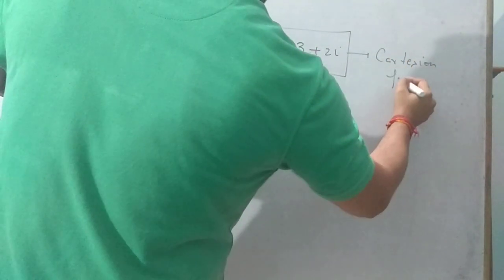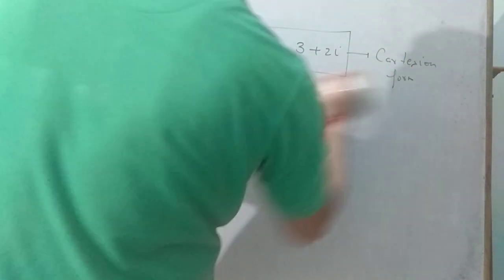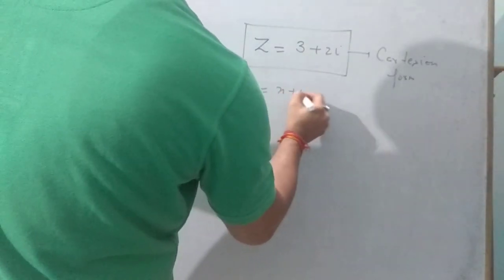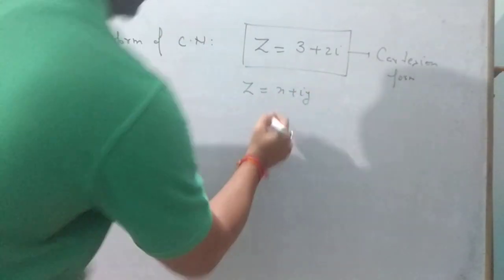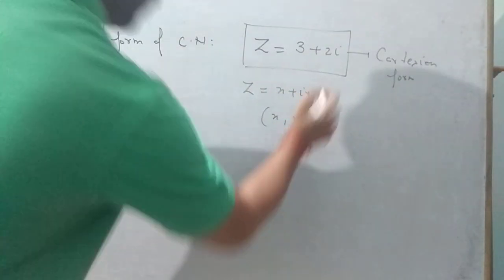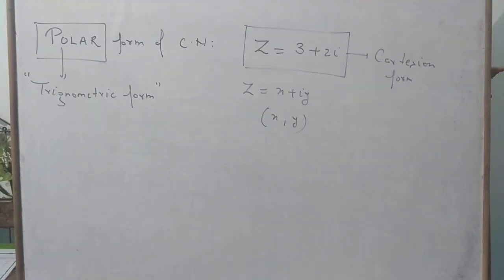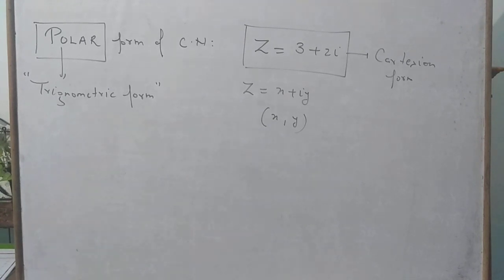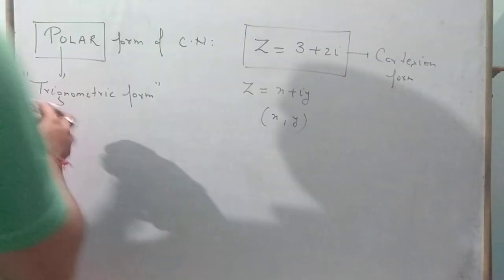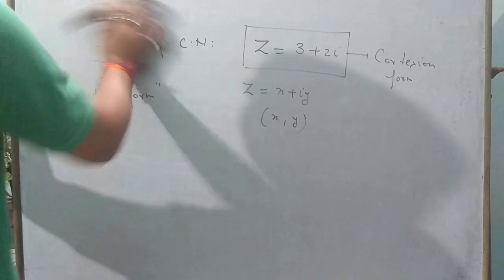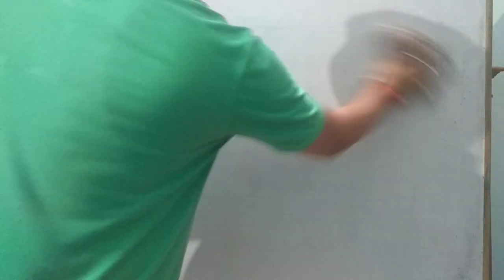Cartesian form is written as Z equal to X plus iY. Before we explain the polar form of complex numbers, also known as trigonometric form, we first need to understand what the Argand plane is.